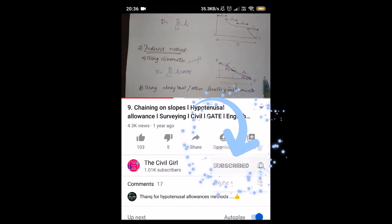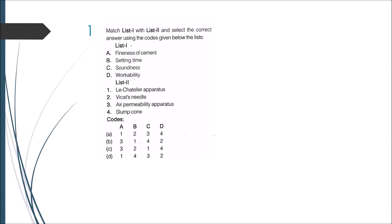The first one is List 1 and List 2 are given. List 1 consists of various types of tests and List 2 consists of the apparatus used for them. If I start from workability, for workability we will use slump cone, so D must be associated with 4. I can omit option B and D because it does not have 4 for option D.